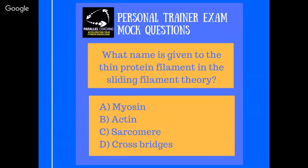When you're breaking this down, it's asking you a couple of things. First of all, do you know what the sliding filament theory is? And also, do you know what a protein filament is? Because there are two of those answers in there that are a protein filament — one is a fatter one, and one is a thinner one. So already, if you understand the question, you can start breaking it down into a 50-50 at the very least. The answer is actin.